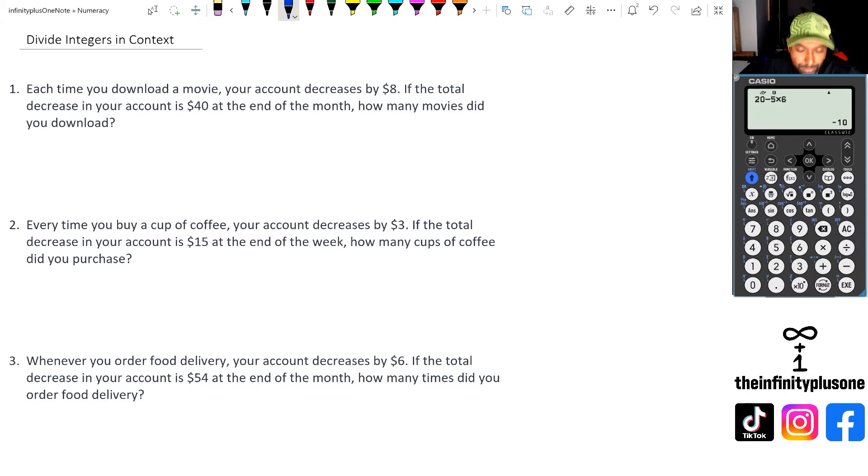So the first question, what we've got here folks, is each time you download a movie, your account decreases by minus eight. Minus eight degrees. Minus eight dollars. This is what happens when you've been working with temperatures for so long. Alright, so we're losing eight dollars every time we download a movie.